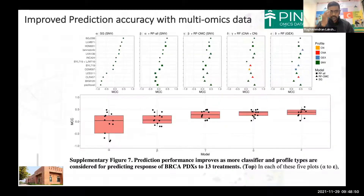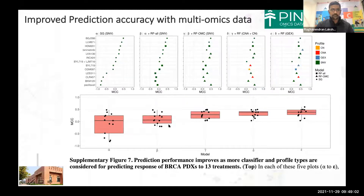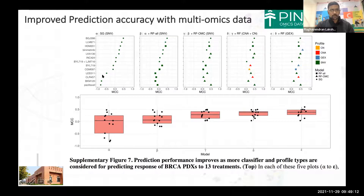So what did we find? First, the traditional use of a single gene biomarker to predict tumor response to any given treatment was not accurate enough. You can see from this part of the graph that accuracy increases as it approaches one and decreases toward minus one. Single gene markers did not accurately predict treatment responses of breast cancer across this multitude of different treatments.